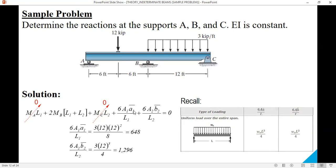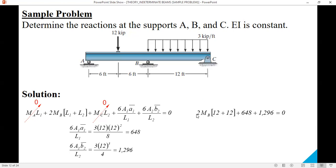Next step is substitute values: 2 times MB times L1 plus L2, plus 648 and 1296. You add and then transpose, negative divided by 2 and then divided by 24. The result is negative 40.5.